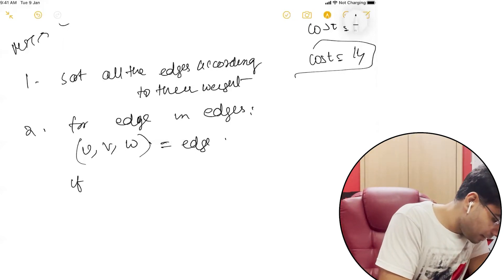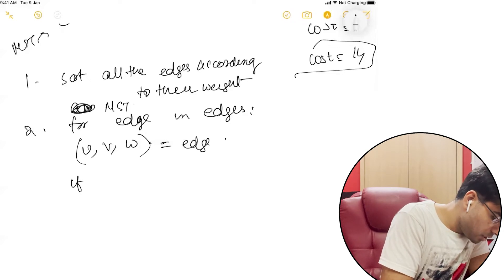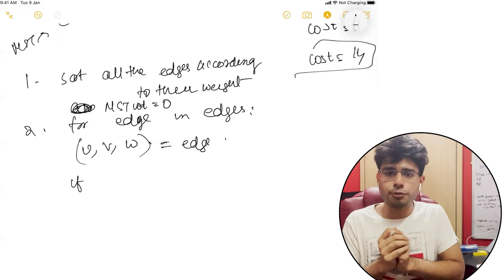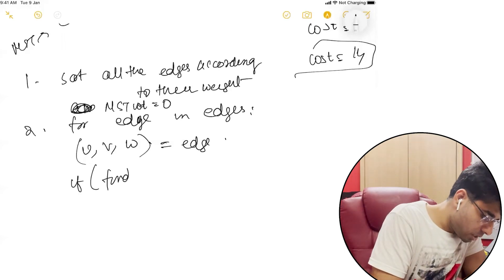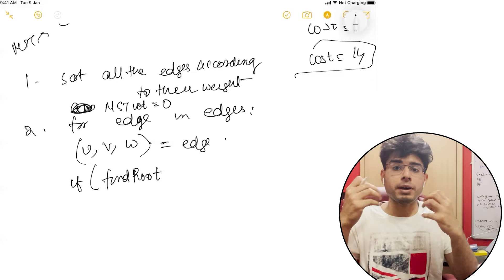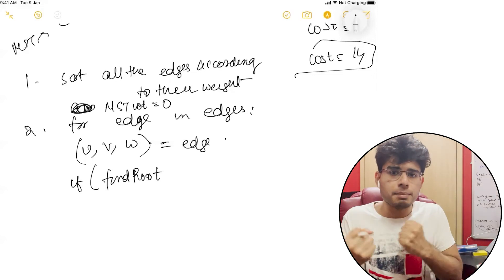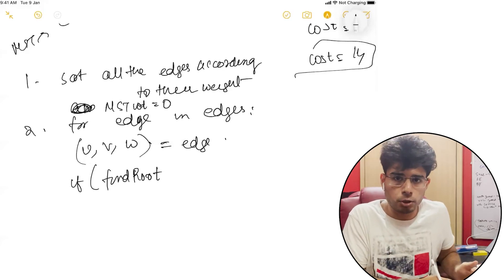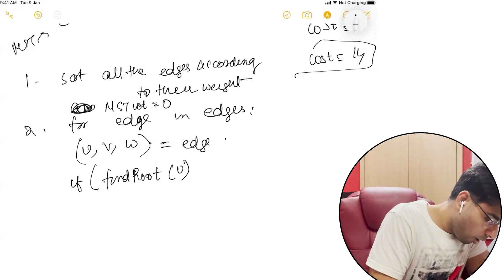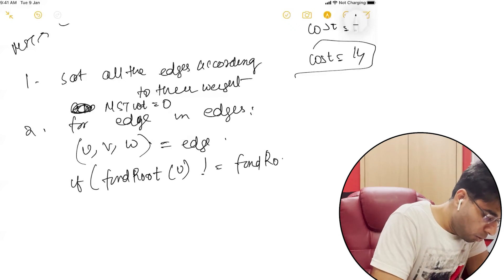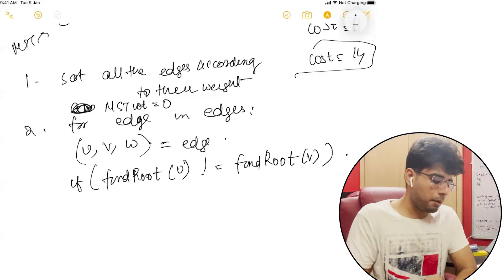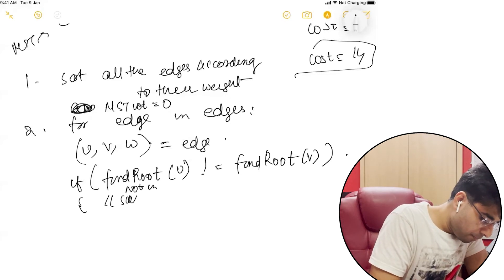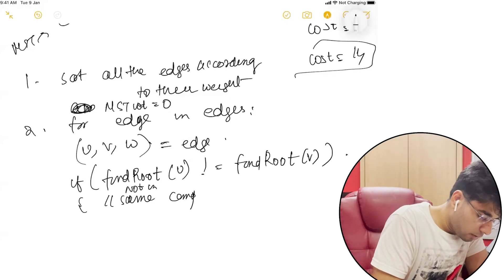Initially, the MST weight will be equal to zero, before the for loop. Now, what we do: we find the root. Remember how we used to check whether they're in the same component? If you've checked the previous video on union-find, this should be easy. So: find root of U, if it's not equal to find root of V, that means they are not in the same component.